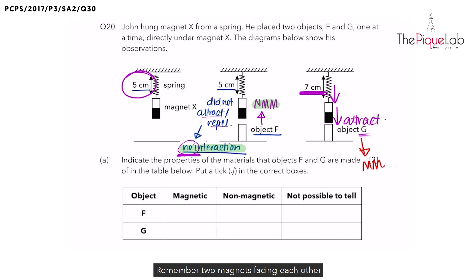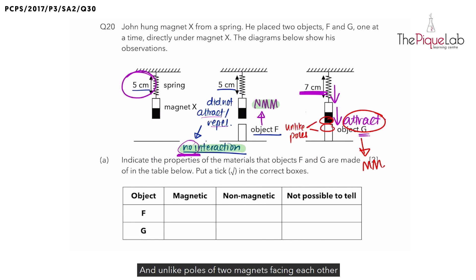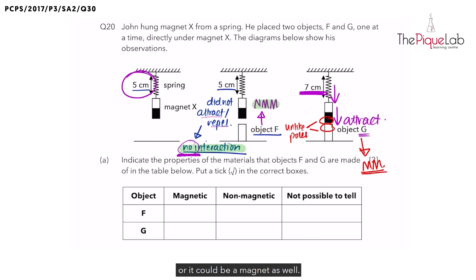Now, could G be a magnet? Remember, two magnets facing each other can either attract or repel. In this case they attracted, which means unlike poles were facing each other — and unlike poles of two magnets facing each other can cause them to attract. So in conclusion, Object G could either be a magnetic material or it could be a magnet. There are two possibilities.